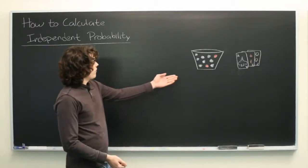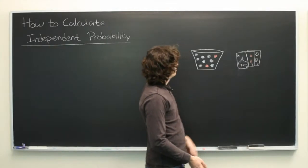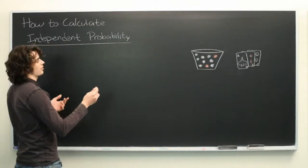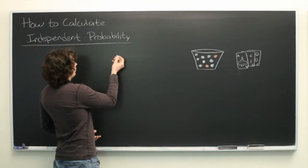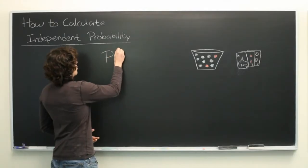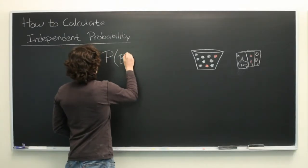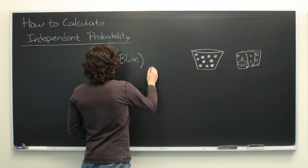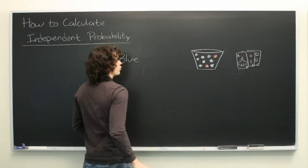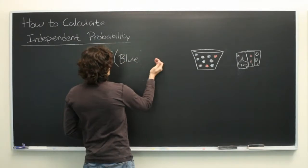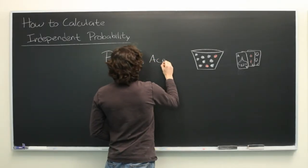So, here we have a bucket full of balls and a deck of cards — well, part of a deck of cards, but we can imagine it's a full deck. What we want to know, for example, is what is the probability of drawing a blue ball followed by the drawing of an ace, in that order.